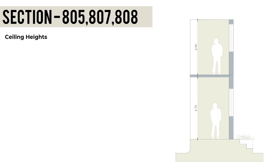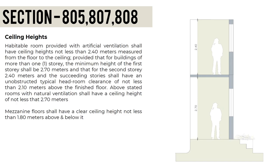Sections 805, 807, and 808 of the NBC discuss ceiling heights. Habitable rooms with artificial ventilation shall have ceiling heights not less than 2.4 meters from floor to ceiling. For buildings of more than one story, the first story shall be at least 2.7 meters, the second story at least 2.4 meters, and succeeding stories must have unobstructed headroom clearance of not less than 2.1 meters above the finished floor line. Rooms with natural ventilation require ceiling heights of not less than 2.7 meters.